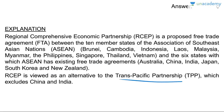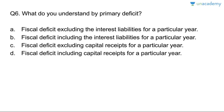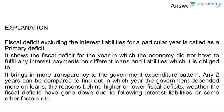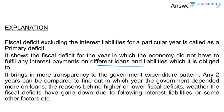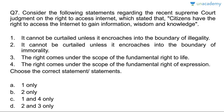Question six: what is the term 'primary deficit'? Primary deficit is fiscal deficit minus interest liabilities. Answer is A. Fiscal deficit excluding interest liabilities for a particular year is called primary deficit — it is like the fiscal deficit for a year in an economy that did not have to fulfill any interest payment. It is a real indicator on different loans and liabilities and brings more transparency to government expenditure.